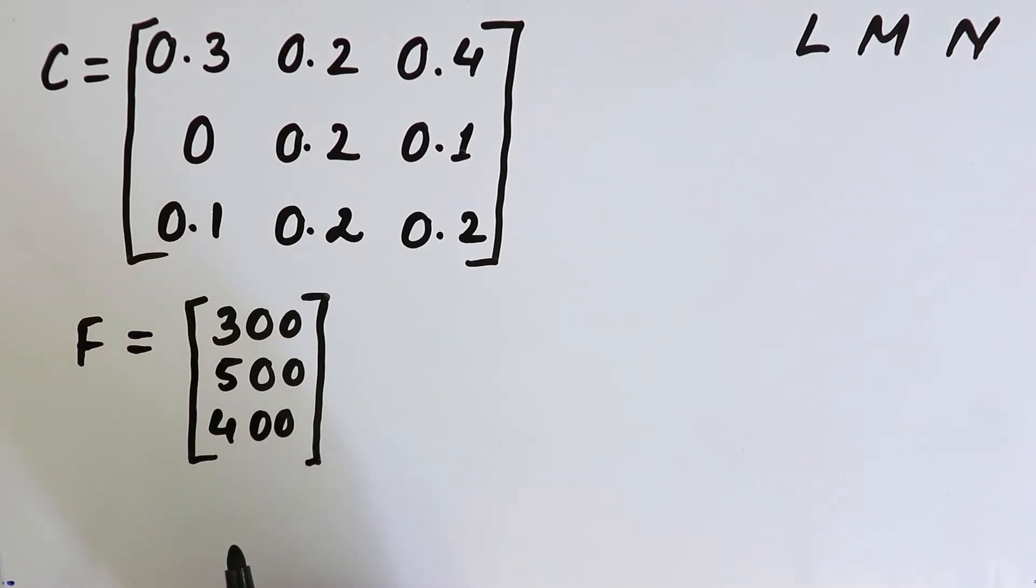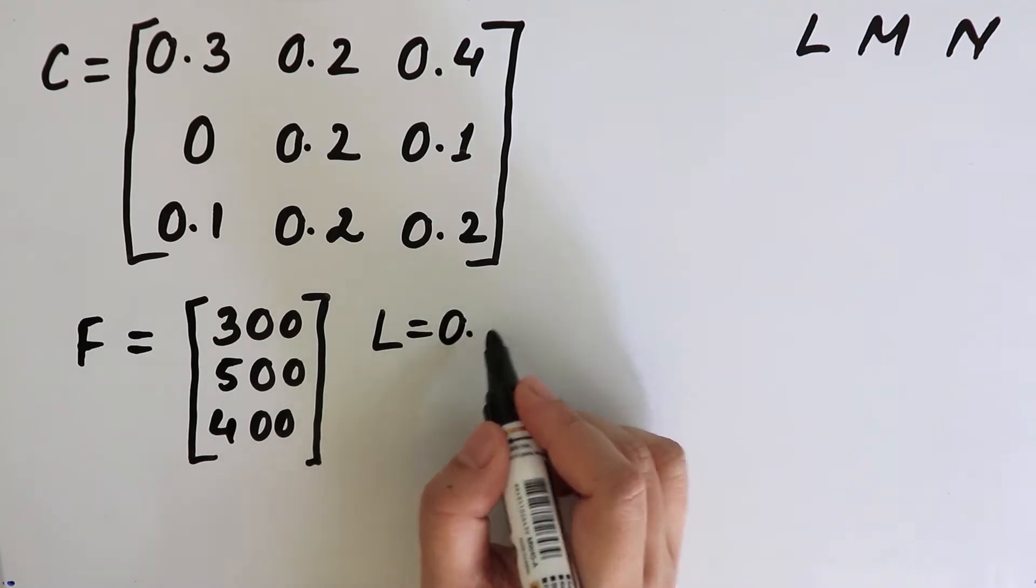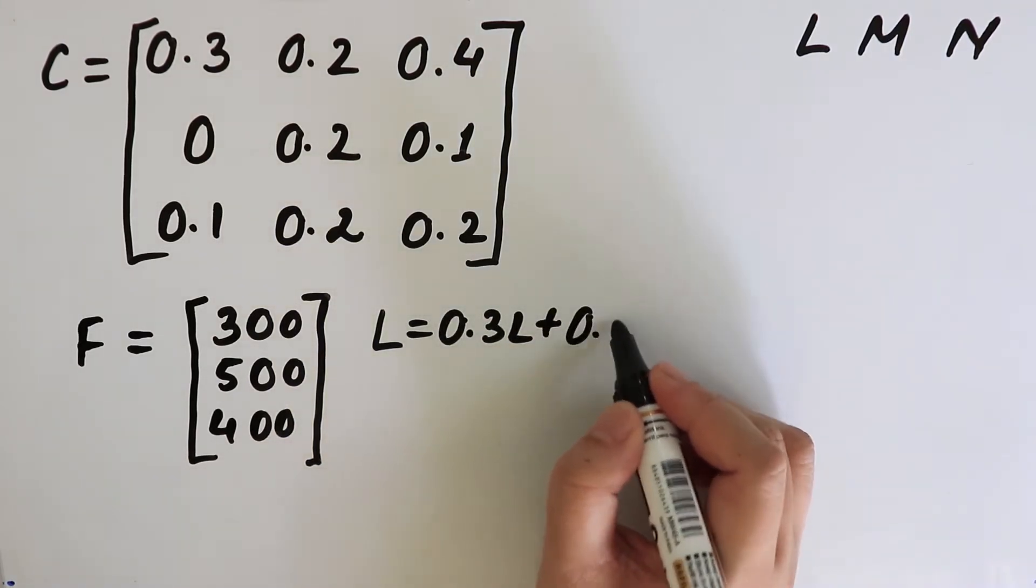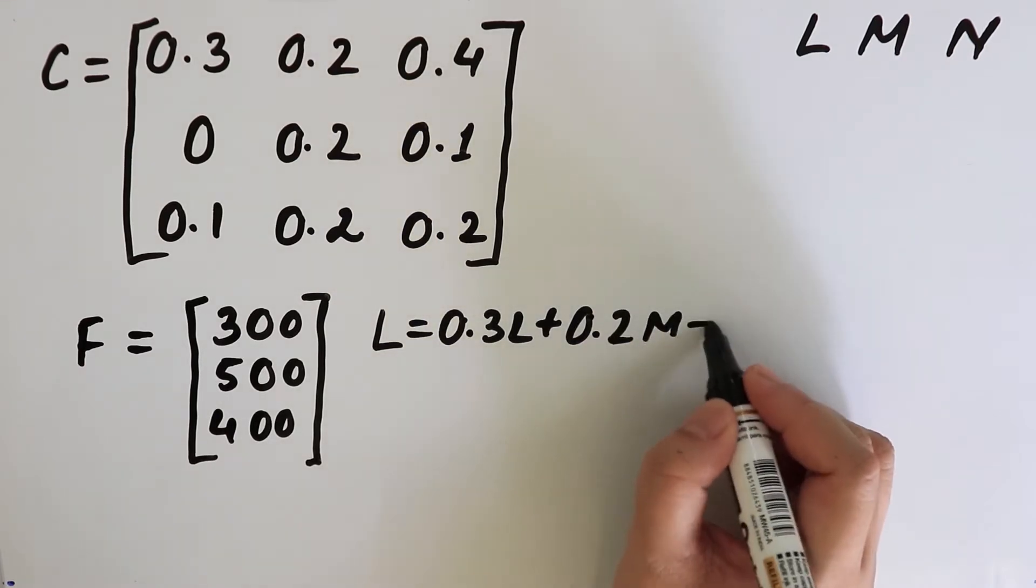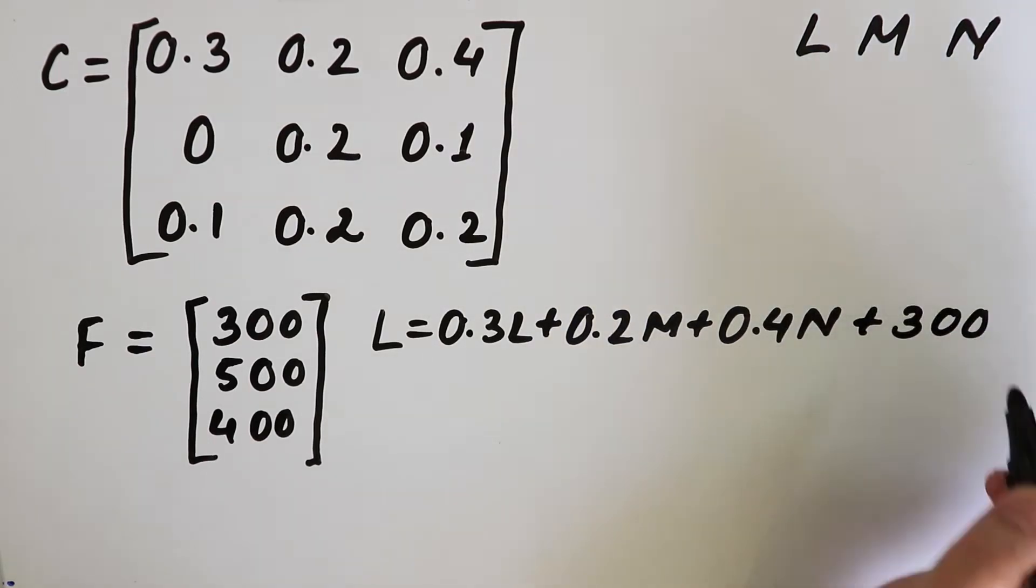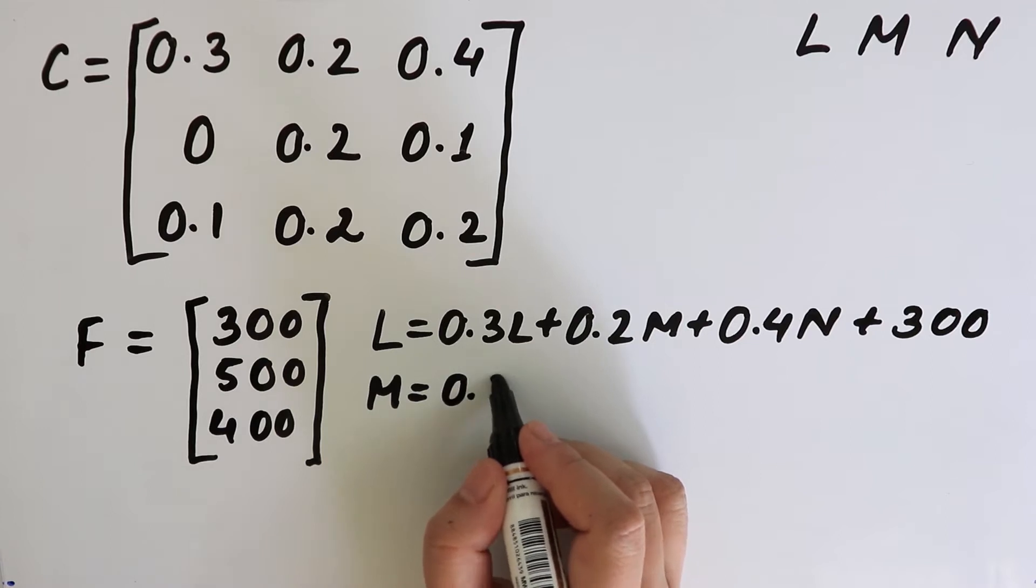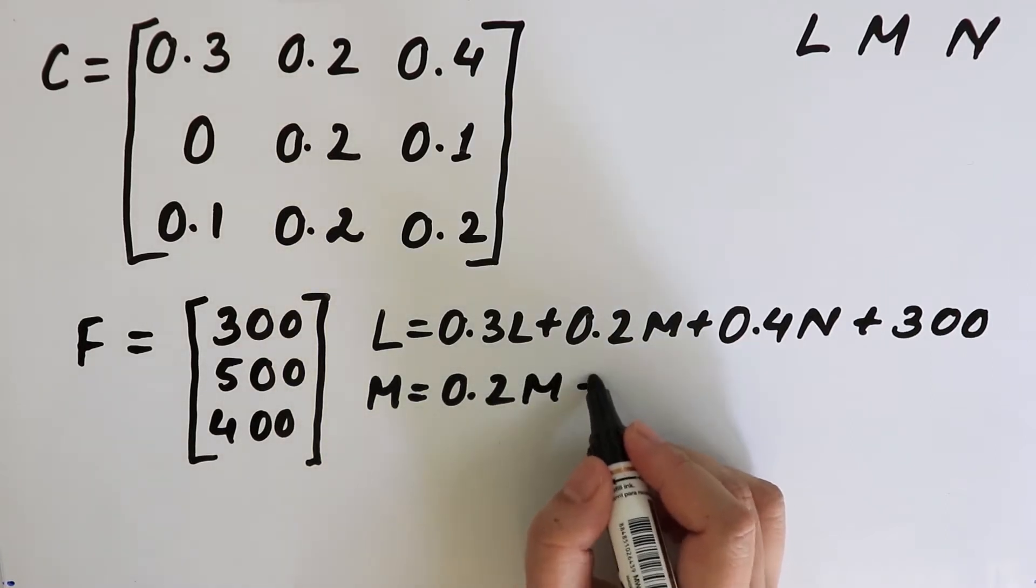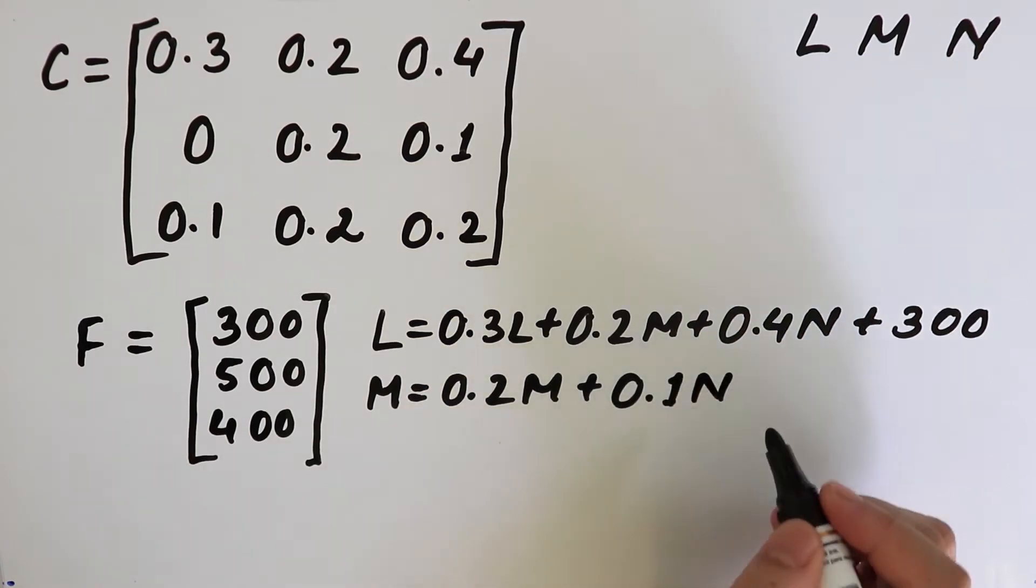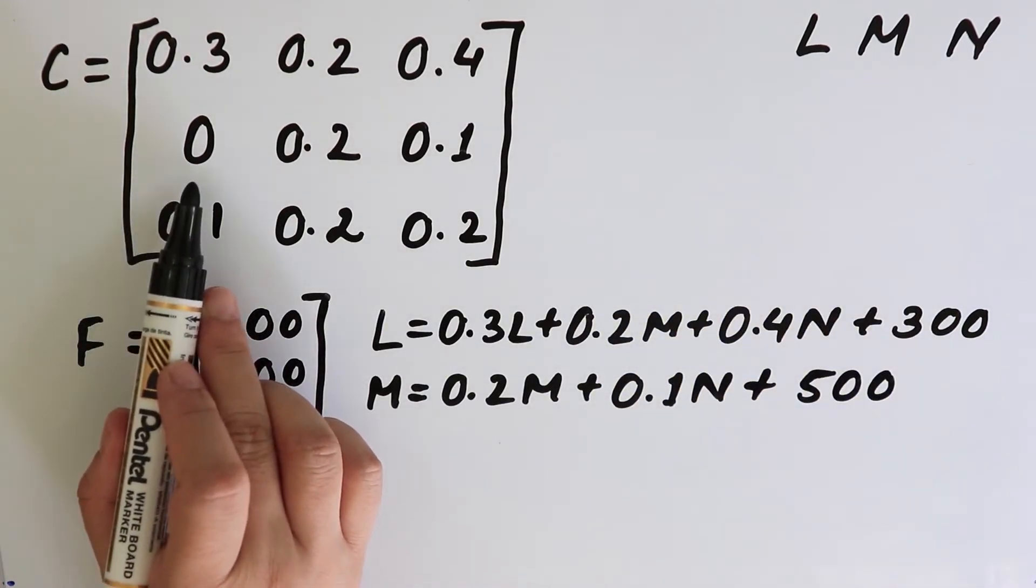Recall that the input coefficient matrix gives the per unit requirement. Therefore, the total output may be mathematically expressed as L is equal to 0.3L plus 0.2M plus 0.4N plus 300. M will be equal to 0.2M plus 0.1N plus 500, because there is no value for L in the second case.